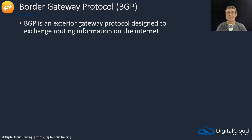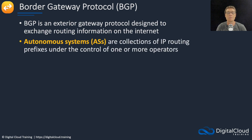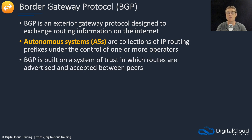BGP is known as an exterior gateway protocol, and it's designed to exchange routing information on the internet. There's a concept called an autonomous system. An AS is a collection of IP routing prefixes under the control of one or more operators. An organisation controls autonomous systems and the routing within them, but may not have control of other ASs. BGP is built on a system of trust in which routes are advertised and accepted between peers, so autonomous systems can peer with each other and exchange routing information.